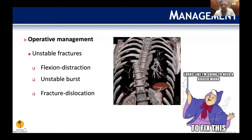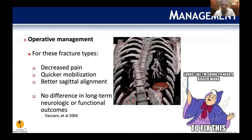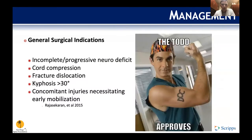For operative management, we're looking at unstable burst fractures, flexion-distraction injuries, and fracture-dislocations. We operate to stabilize the spine, decrease deformity, and get patients on rehab faster. However, surgery has not been reliably shown to make a difference in long-term neurologic outcome. Surgical indications are: incomplete or progressive neurologic deficit, cord compression, fracture-dislocation, kyphosis greater than 30 degrees, and polytrauma patients with other injuries.